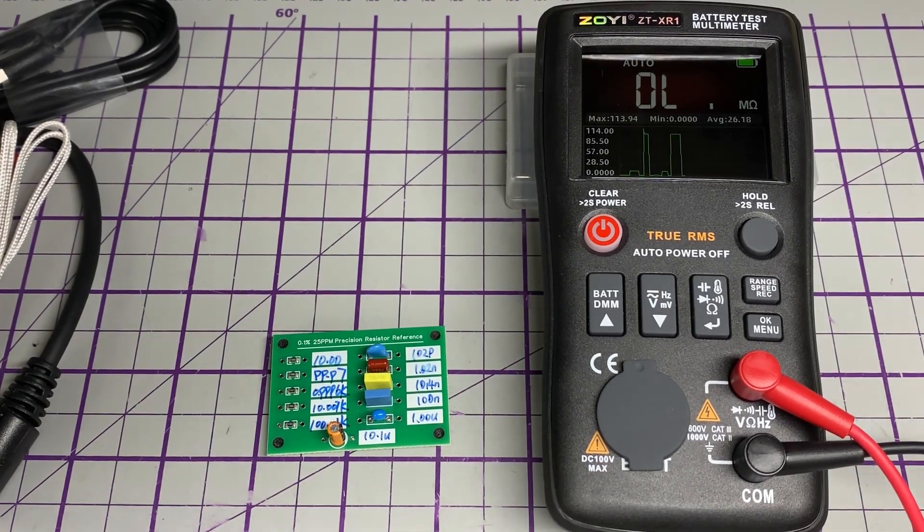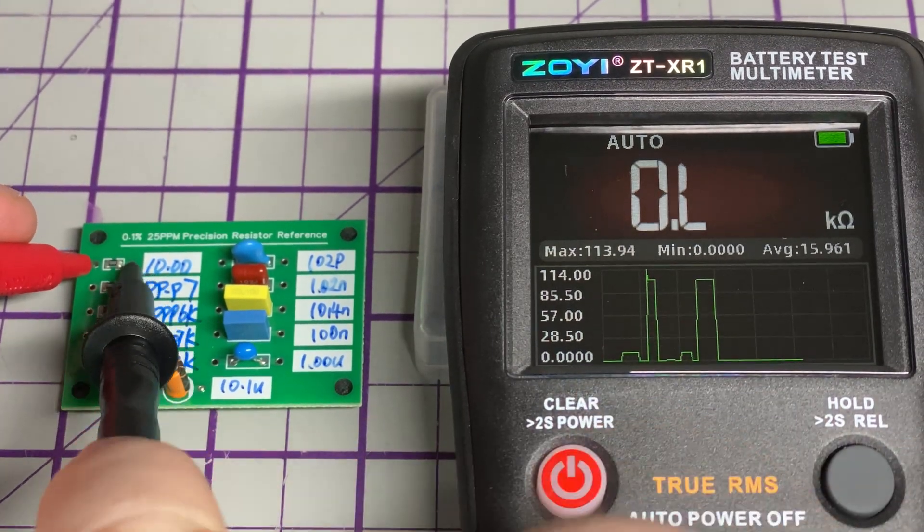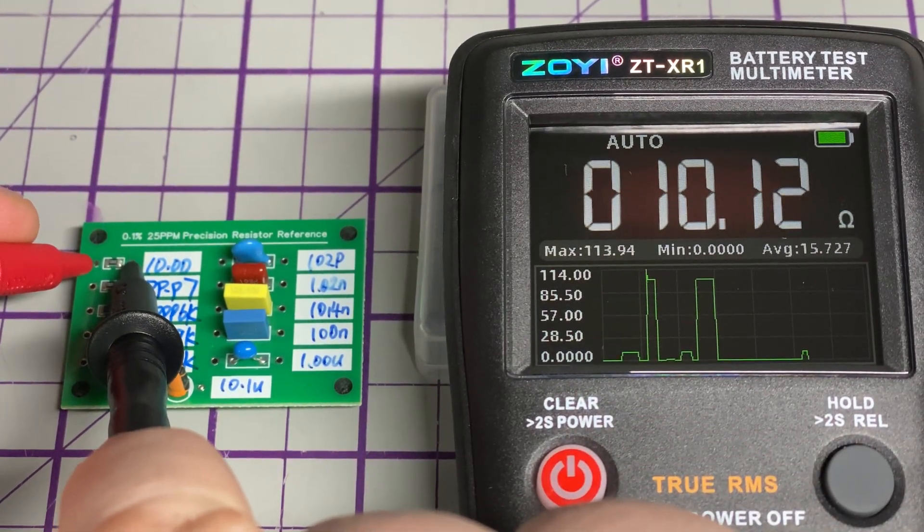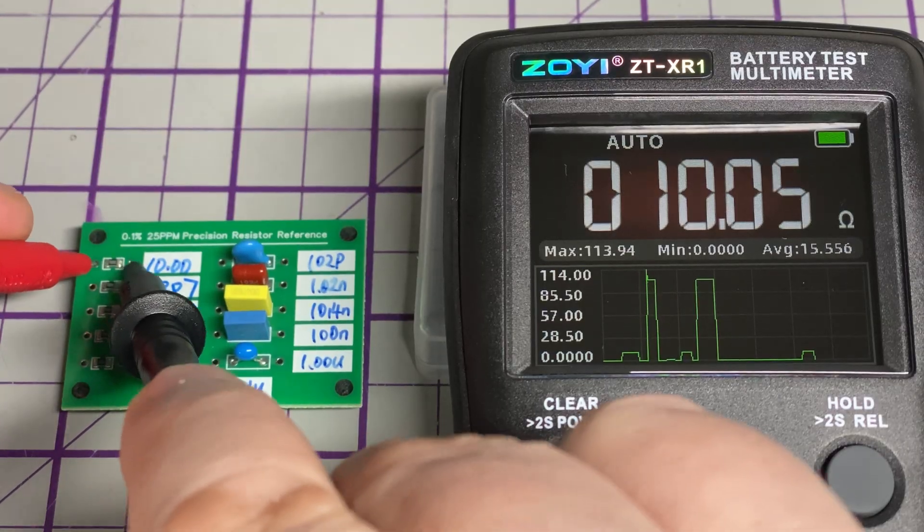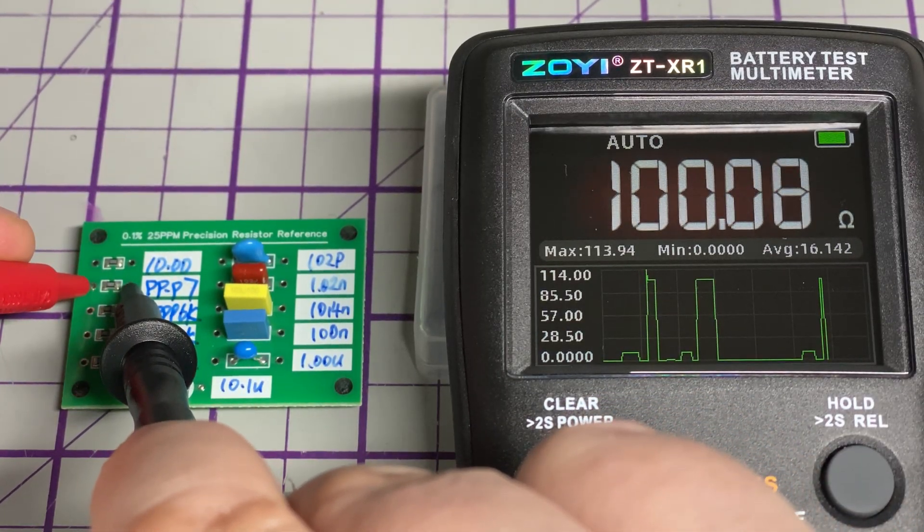I know it's not a calibrated reference, but it's good enough. Let's have a closer look at that screen. There's a 10 ohm range, there's 100 ohm.